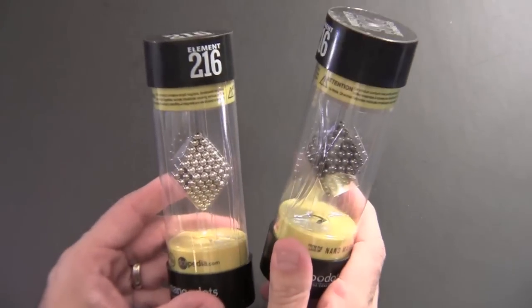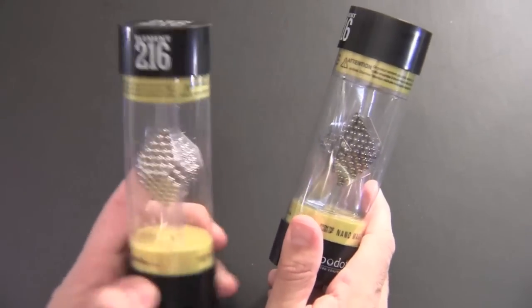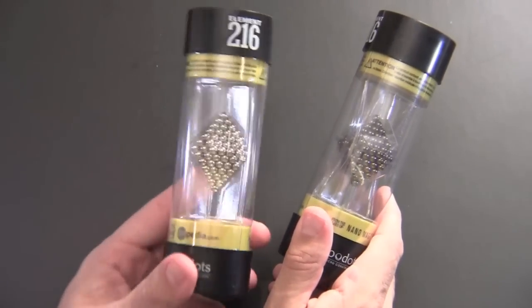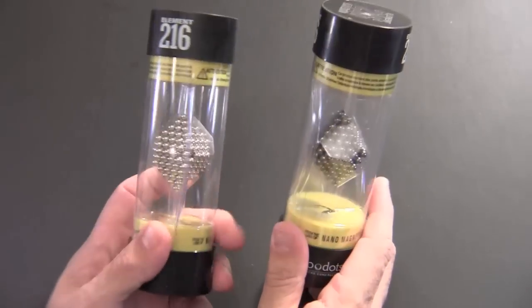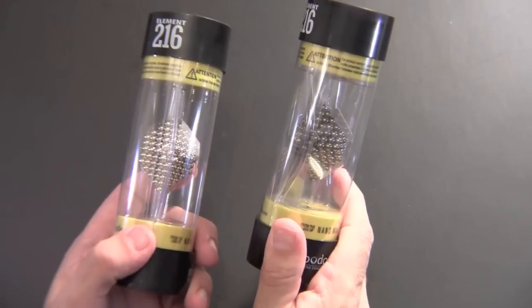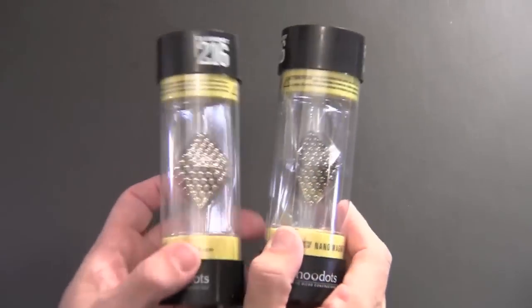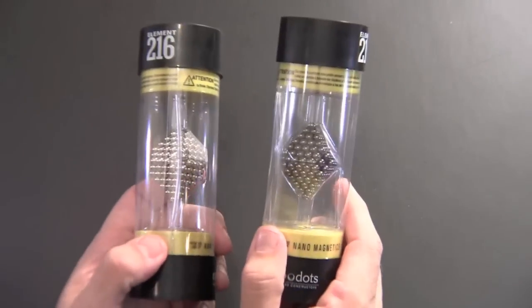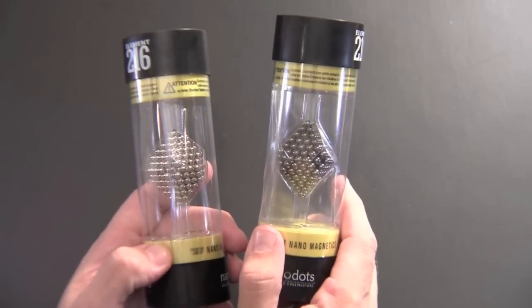The NanoDots come in four different color variations. The classic version which I have here sells for $29.99. That's the original color. Then they also have black and silver. This is the black. The black and silver sell for $34.99. And if you really want to go all out they have a gold version that sells for $39.99.